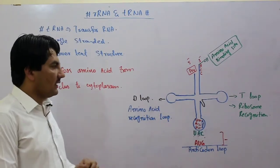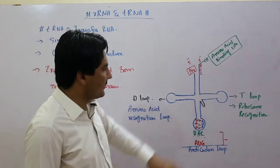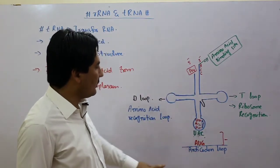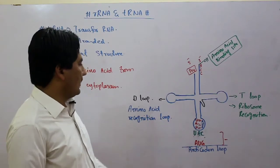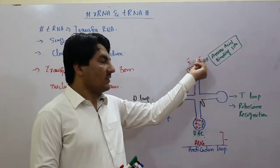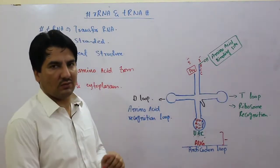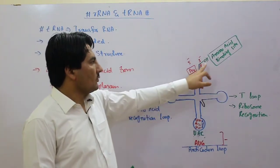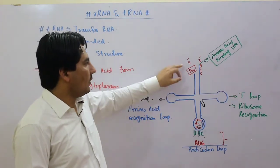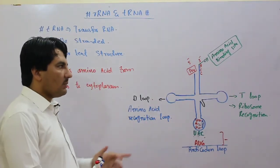The structure of transfer RNA has three major loops: one is the T-loop, the other one is the anticodon loop, and the last one is the D-loop. At the three prime end, the hydroxyl group is attached, and at the five prime end, the phosphate group is attached.